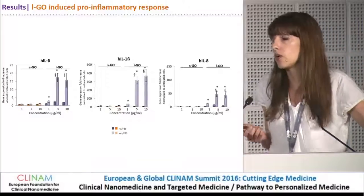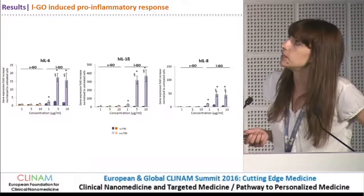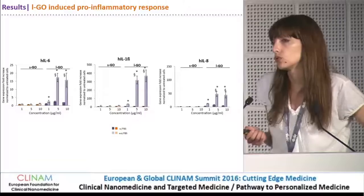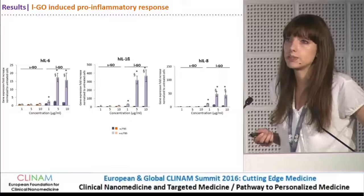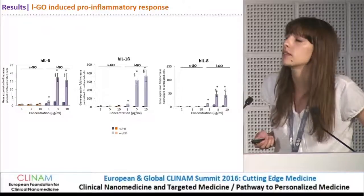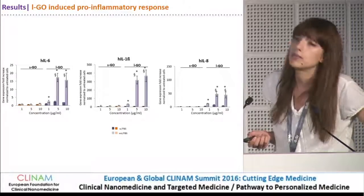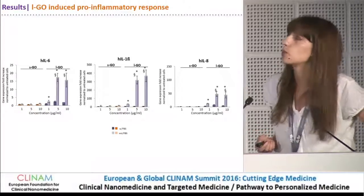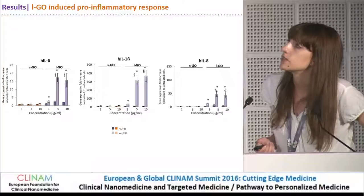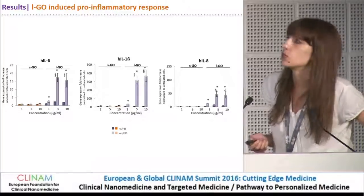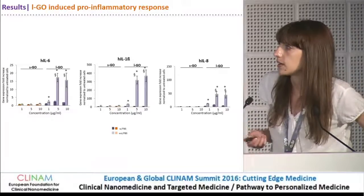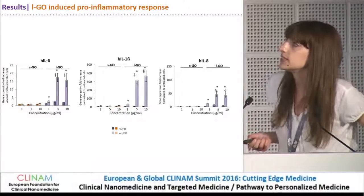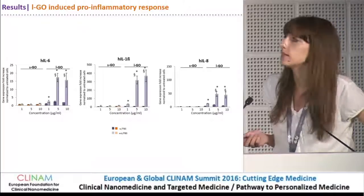The third tier of the cellular response to the material goes through activation of the pro-inflammatory response and activation of genes involved in this. As we performed 24 hours of treatment, we were interested in genes involved in the expression of the acute phase of the pro-inflammatory response. We measured the activation of genes for interleukin-6, interleukin-1 beta, and interleukin-8.